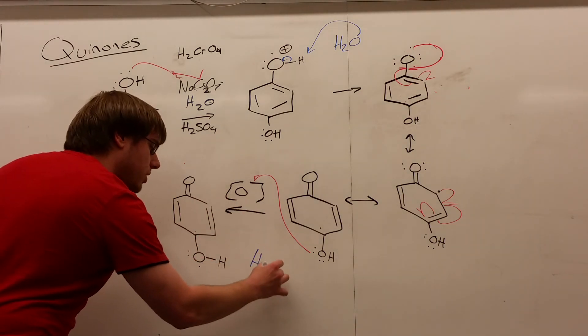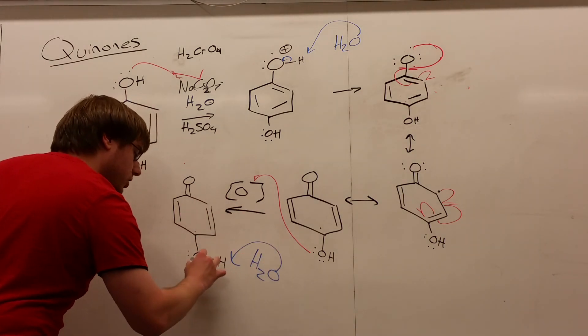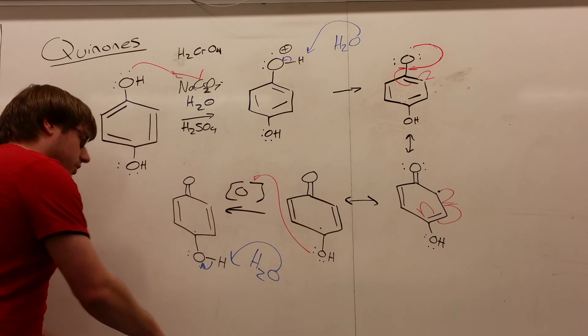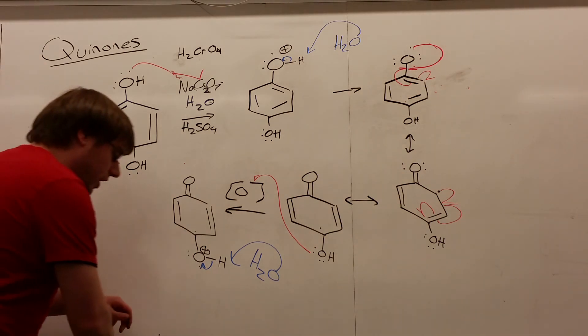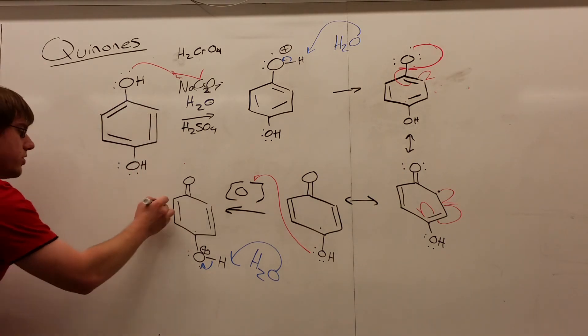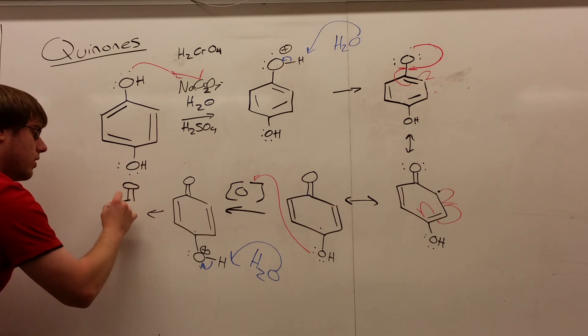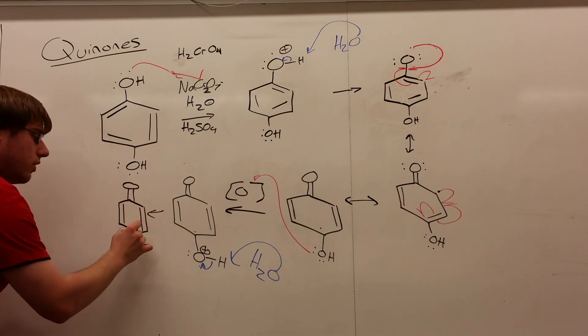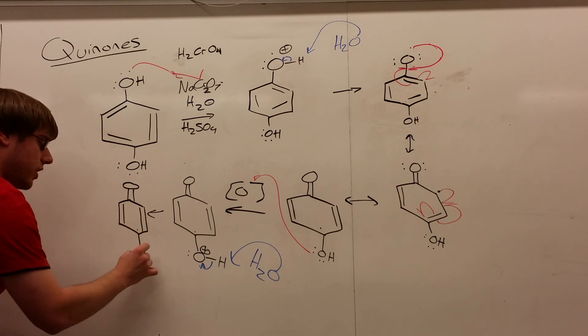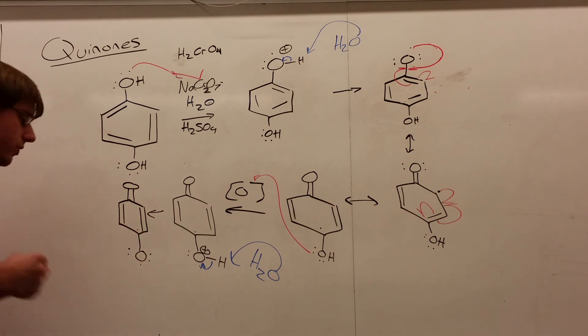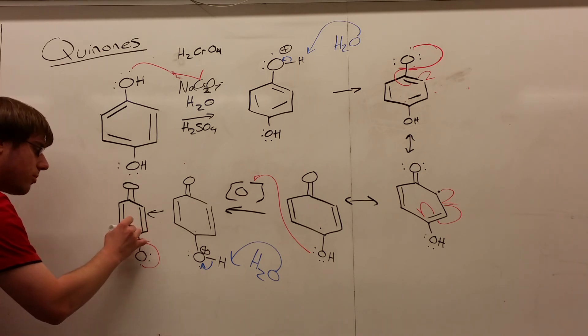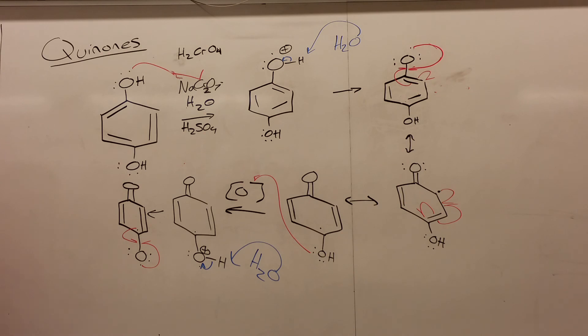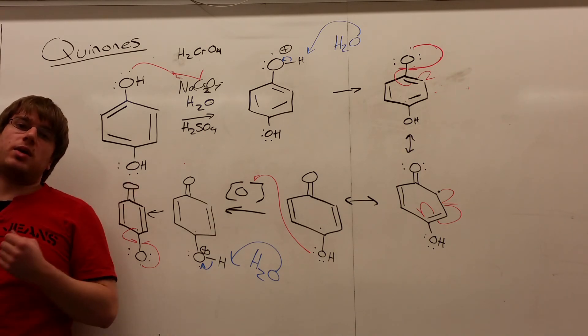Now what's going to happen is one more time, your base will come in, pull off that proton, neutralize the oxygen whose charge I forgot to draw. This oxygen was positive. And now we're going to have two radicals right next to each other. Radical in the para position, radical in the oxygen with two lone pairs. And finally what's going to happen is those two radicals will converge at the bond between the carbon and the oxygen, forming your double bond and giving you the paraquinone that you expect. And that's the mechanism.